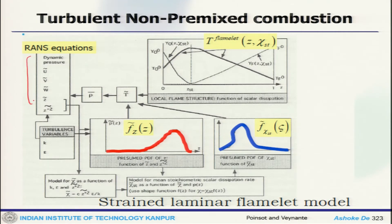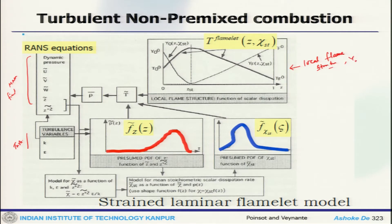You solve the mean flow field along with turbulence equations — mean field and turbulence — and since this is a flamelet approach, one required input is the local flame structure. All species mass fractions and temperatures are solved using detailed kinetics and the values are stored. Then using the information of mixture fraction and its variance, along with turbulence information, we get the probability distribution function of Z. This is essentially a beta function, and using Z and Z variance we can obtain it.